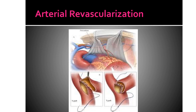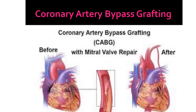Next is coronary artery bypass grafting or CABG. The occluded coronary arteries are bypassed using the client's own venous or arterial blood. The saphenous vein, internal mammary artery, or other arteries may be used to bypass lesions in the coronary arteries. CABG is performed when the client does not respond to medical management or when vessels are severely occluded.